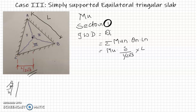So length will be L. Here you get it as 2 root 3 into mu into delta. This L and L gets cancelled. So this is the internal work done.